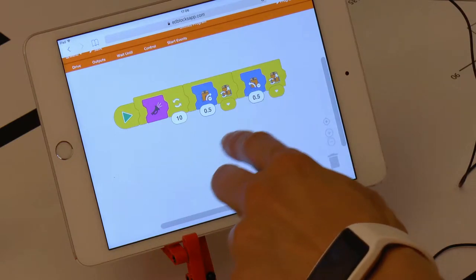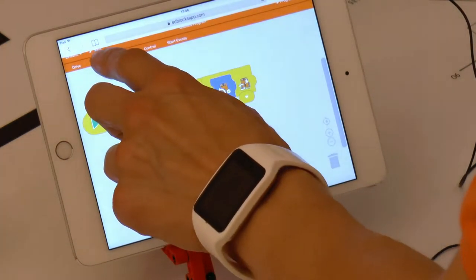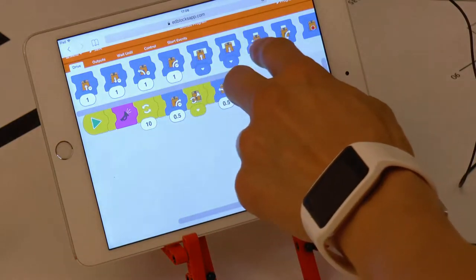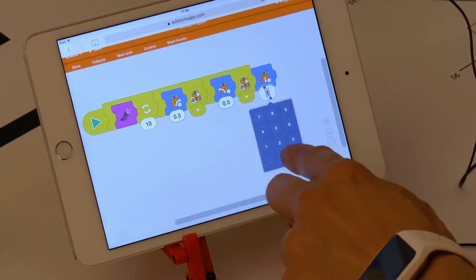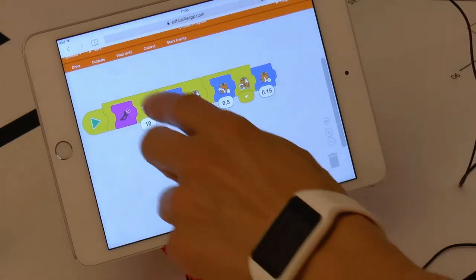I made a program where first Edison plays 10 beeps, then slowly turns right 0.5 seconds at a time until the triangular button is pressed, and lastly it turns left 0.5 seconds at a time until the round button is pushed.